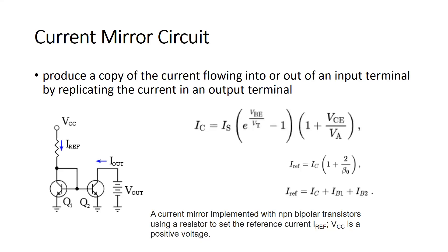Let's discuss the topic of current mirror. When you design an electronic system with a circuit containing lots of components, you need a stable current reference source. That reference current flows into the circuit and provides current to different elements. But what if you have other parts of the circuit or other components where you also need current?